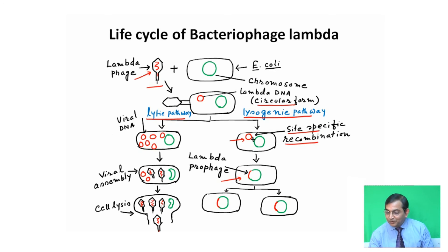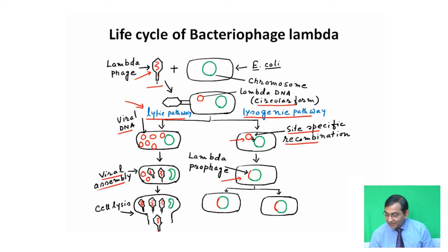In the lytic pathway, which is also an important pathway, lambda DNA replicates. Then viral assembly occurs, whereas host DNA is degraded and cell lysis occurs by the secretion of lysozyme, and mature lambda phage comes out from the host cell.